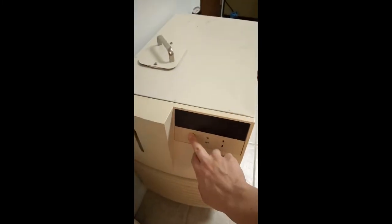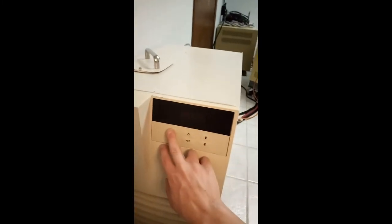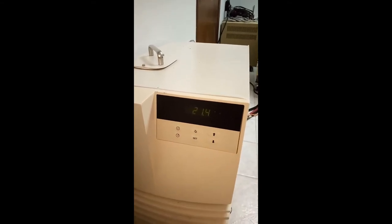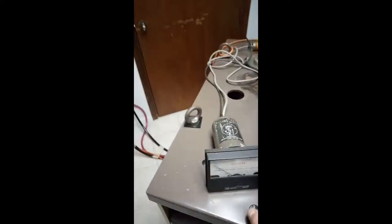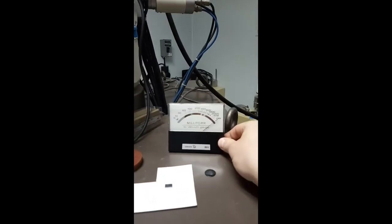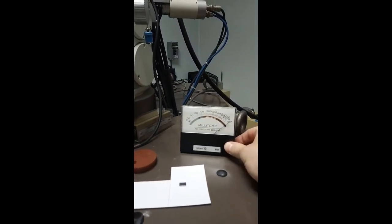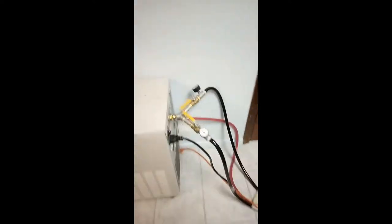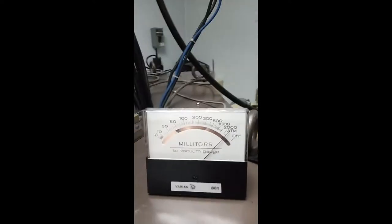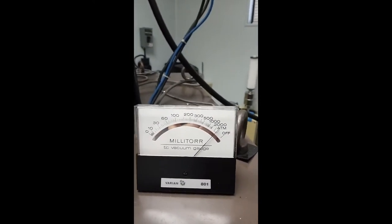We turn on the water recirculator. It's already set at the right temperature. The high vacuum gauge and the low vacuum gauge are on their own power. So we need to plug that one in. You can see the needle has moved to atmospheric pressure.